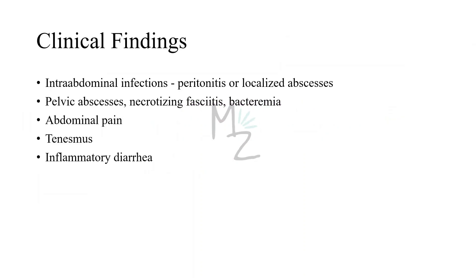Clinical findings: Bacteroides Fragilis is most frequently associated with intra-abdominal infections — either peritonitis or localized abscesses. Pelvic abscesses, necrotizing fasciitis, and bacteremia can also occur. Symptoms range from abdominal pain to tenesmus and inflammatory diarrhea.